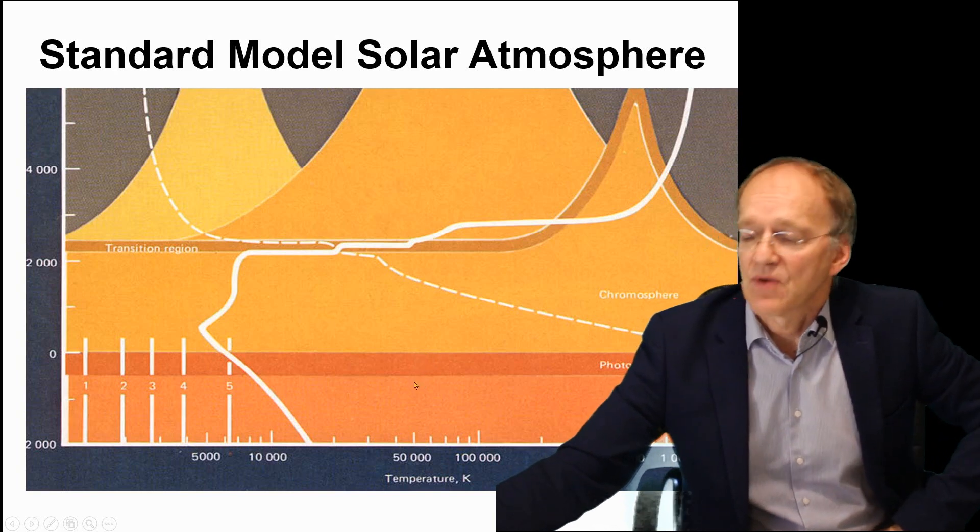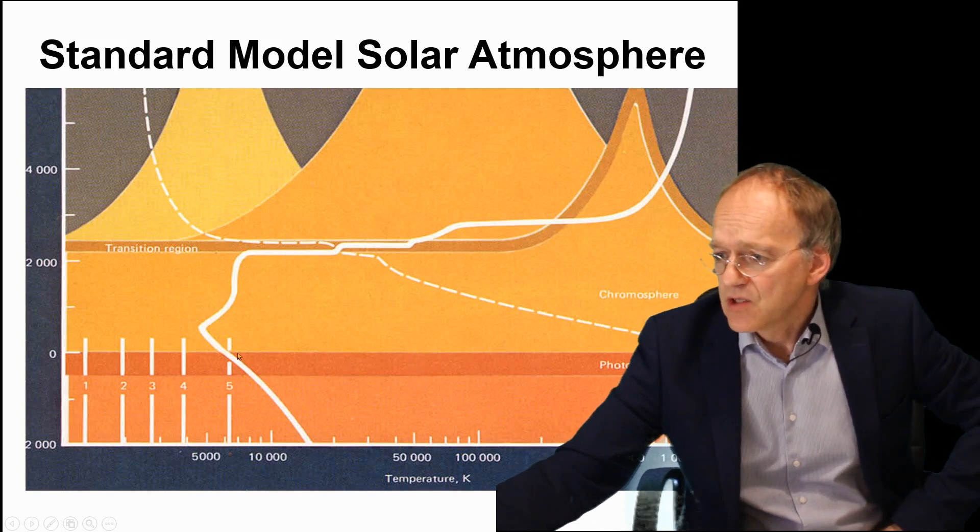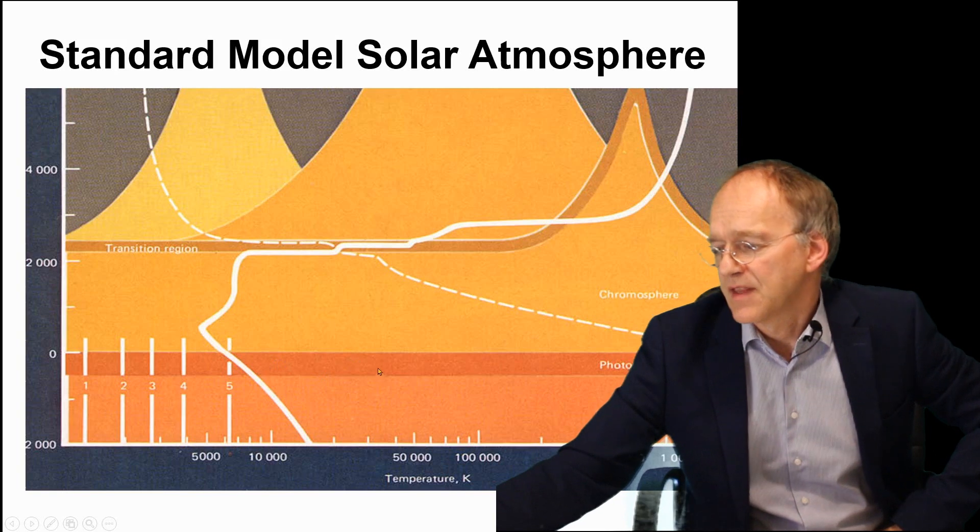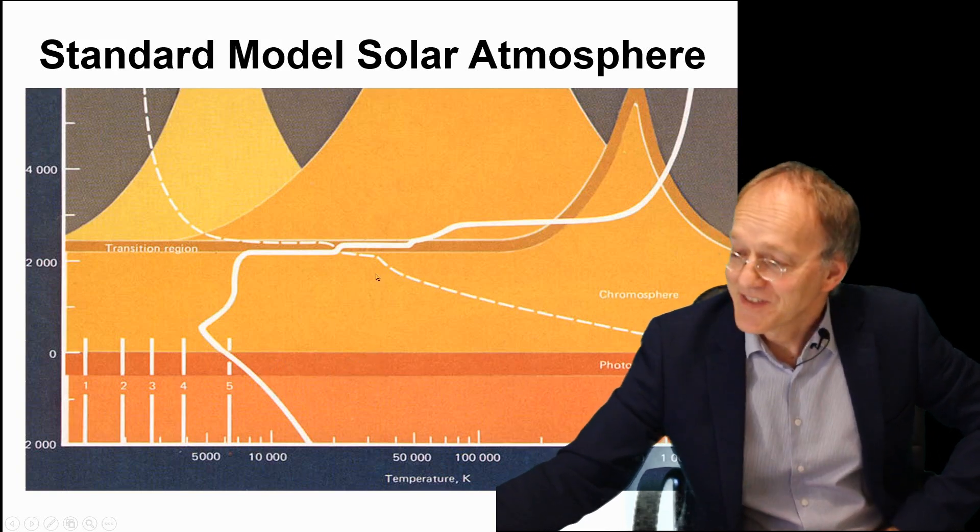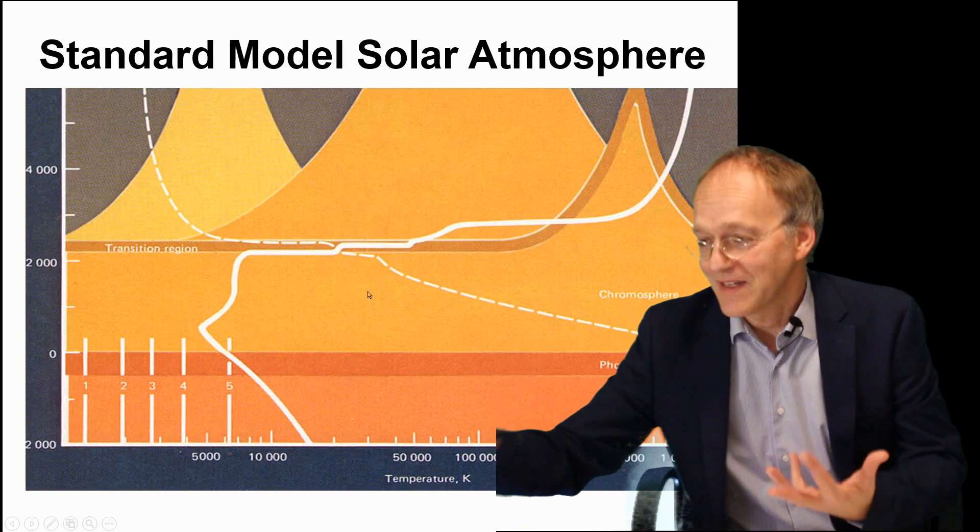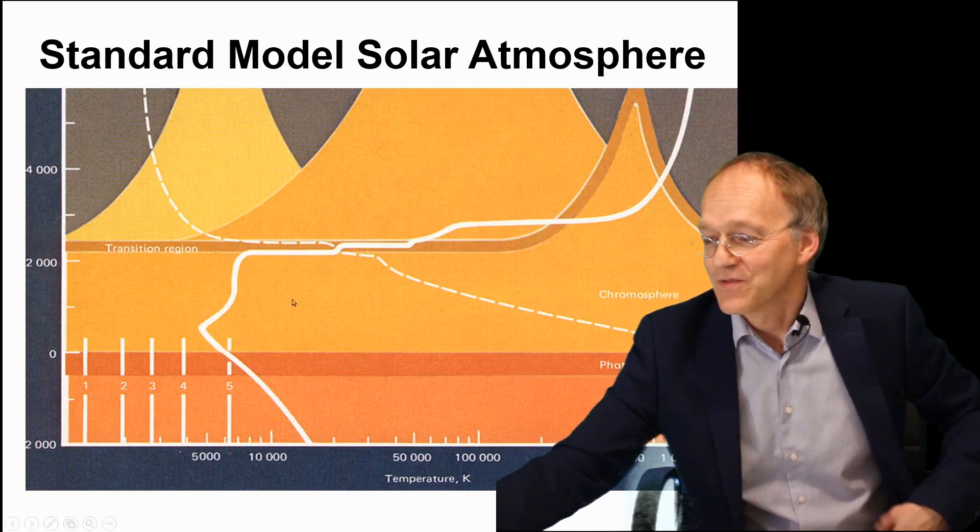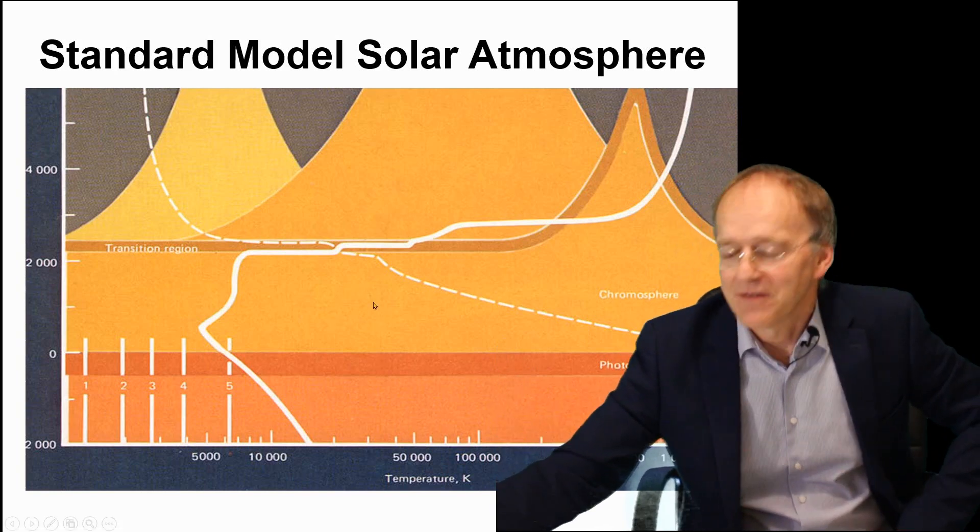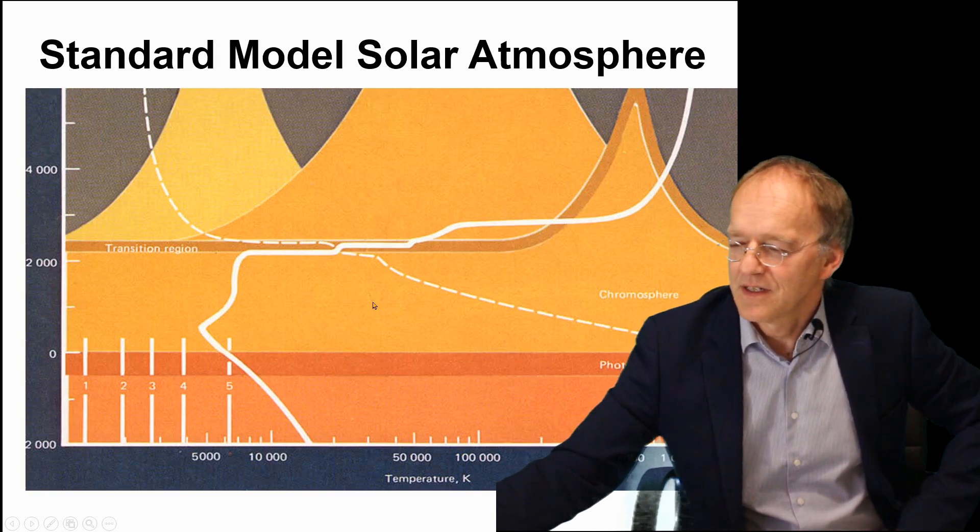It must become opaque and transparent in the range of 500 kilometers at the photosphere, and at the same time it must be totally transparent in the chromosphere, which is slightly above.